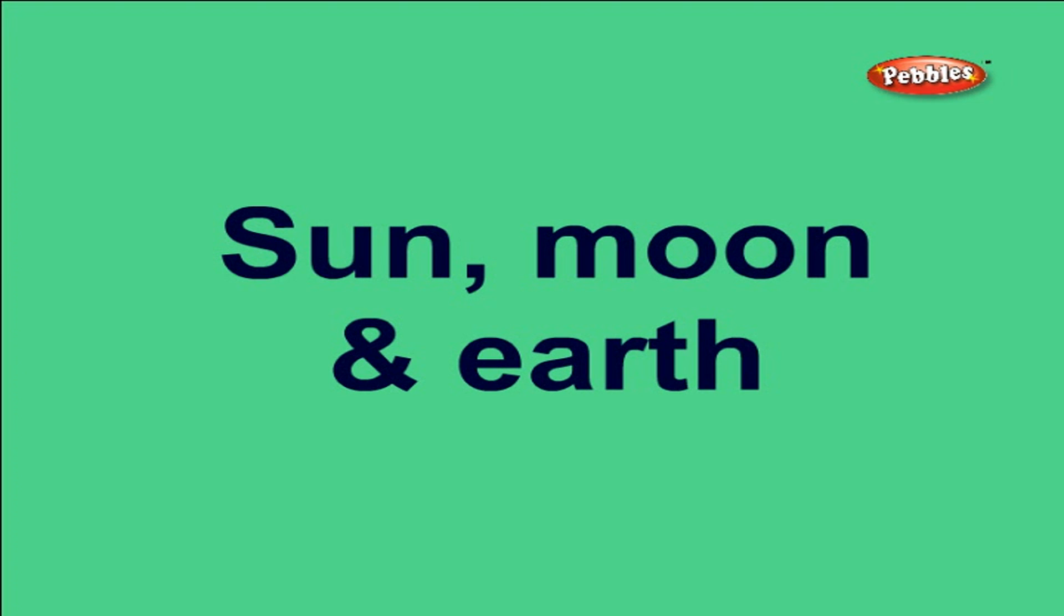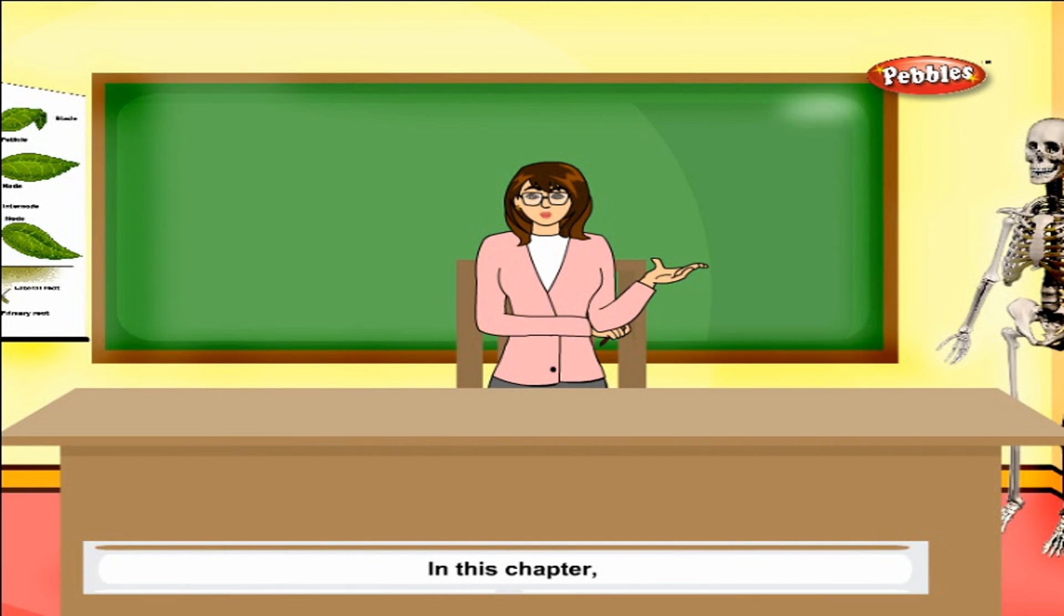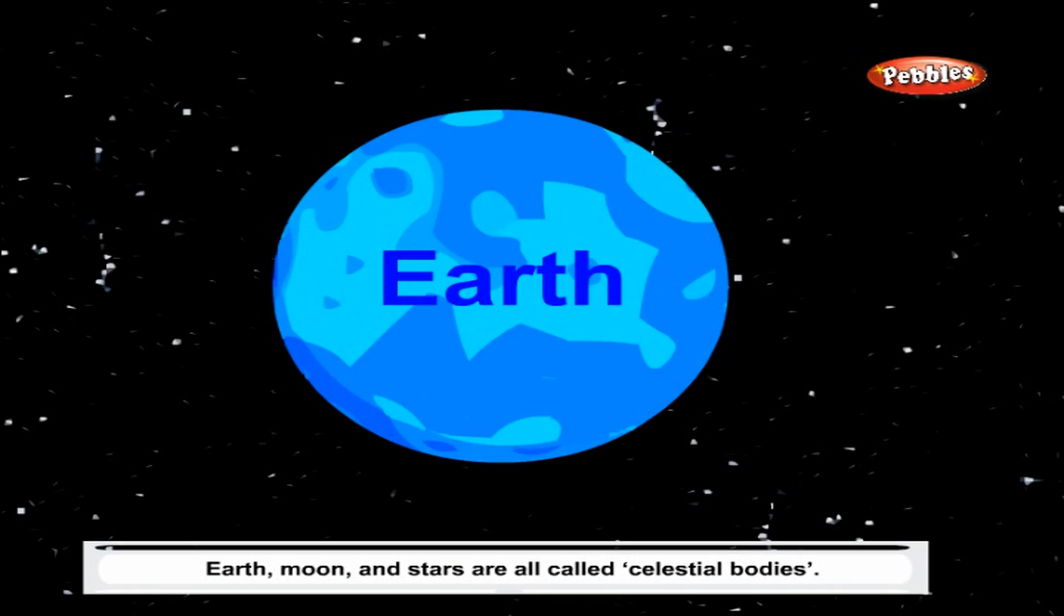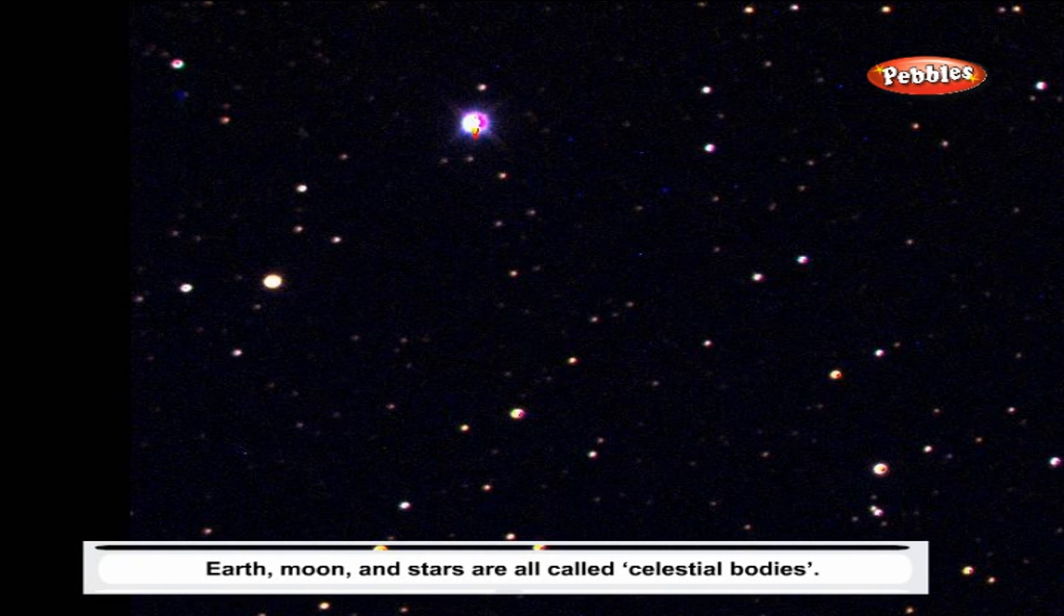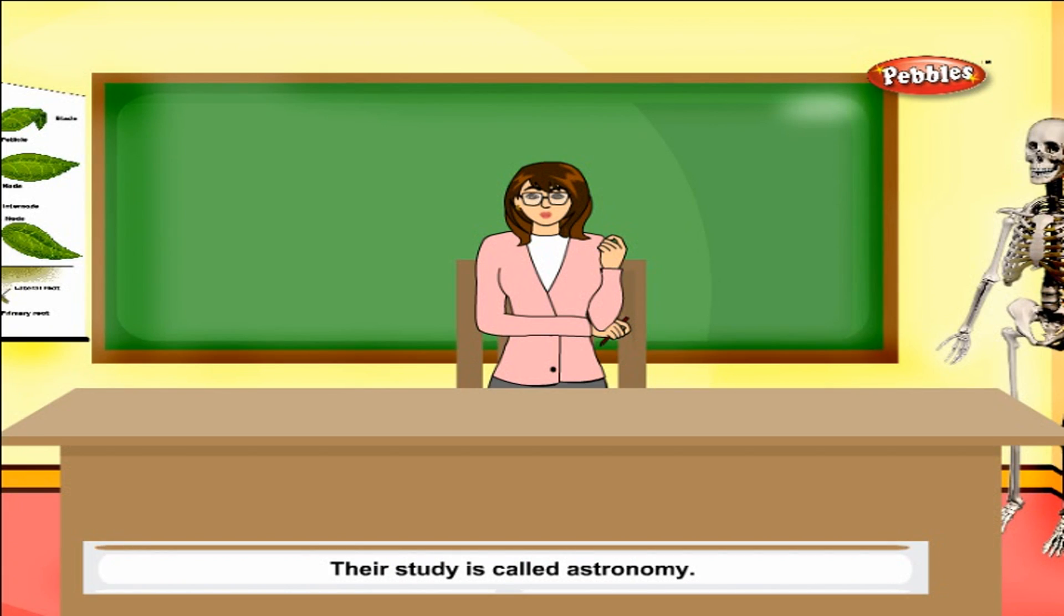Sun, moon and earth. In this chapter you will learn about earth and its internal structure, the solar system and eclipses. Earth, moon and stars are all called the celestial bodies. Their study is called astronomy.